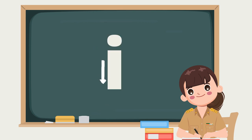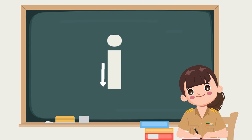Let's practice writing small letter I. Line down and dot on top. Line down and dot on top.